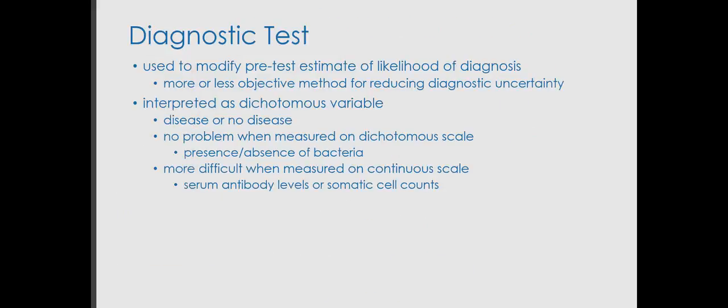The diagnostic test is there to basically modify probabilities, even if the diagnostician doesn't explicitly think in those terms — they may do so intuitively. The test is a more or less objective method in addition to the other factors discussed. The outcome — and this is the tricky bit — is the diagnosis, a dichotomous parameter in the sense that it has two values: the animal is diagnosed as being diseased or not diseased. In fact, what often happens is that diagnostic tests measure some continuous scale parameters such as serum antibody levels or somatic cell counts, and then another decision has to be made about from which value onwards the test is considered positive — but that will be a topic for a later video.